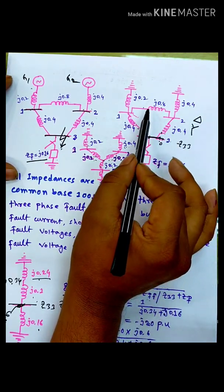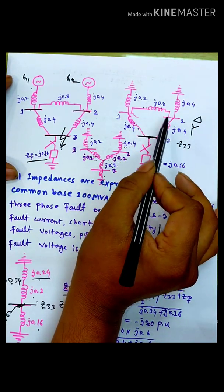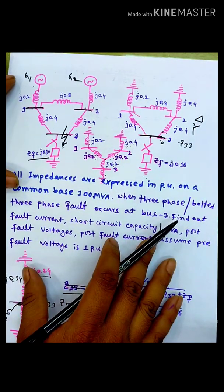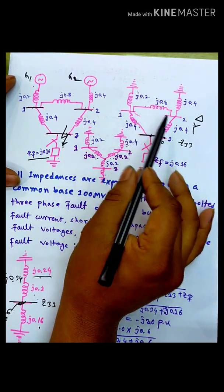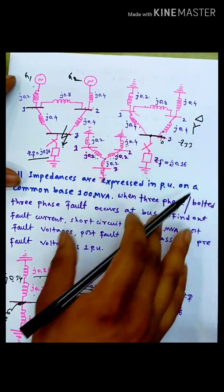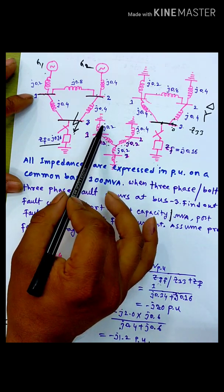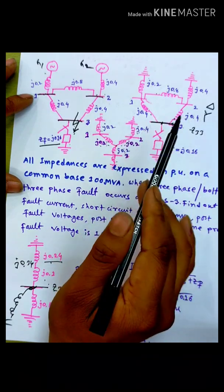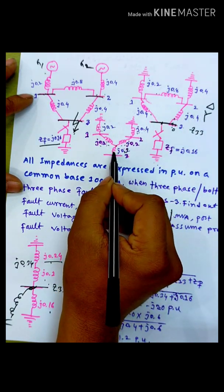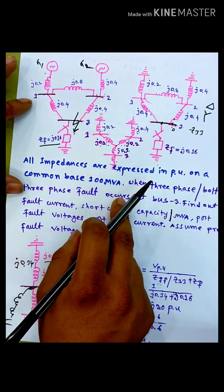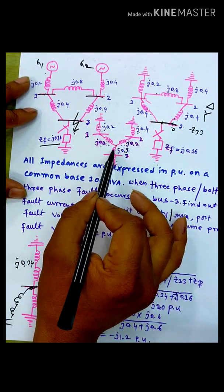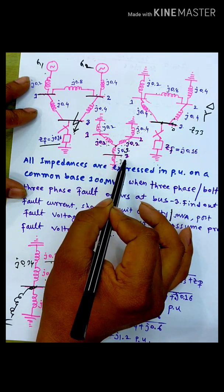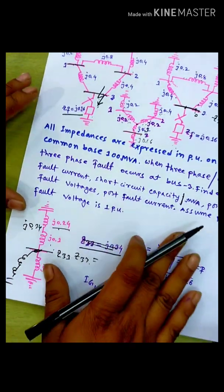Three reactances are delta connected. If we have to convert this to star, we will be able to convert the total reactances. Two reactances are gone and three reactances are gone — we have to get delta to star. This is Z.2, 0.4. But these two reactances are 0.2, this is 0.2, this is maybe 0.1. Three reactances are connected: this is Z.3, this is J.6.